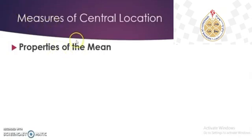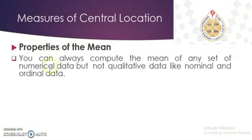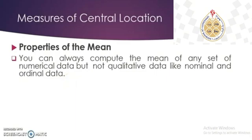Let's look at the properties of the mean. The first property is that you can always compute the mean of any set of numerical data, but not qualitative data like nominal and ordinal data. For example, you cannot get the average of male and female, which is nominal data. For ordinal data like educational qualification — high school graduate plus college graduate plus college undergrad divided by three — it is impossible to get a meaningful average.